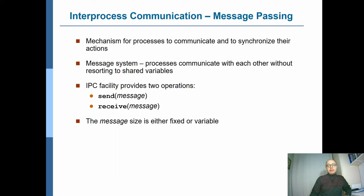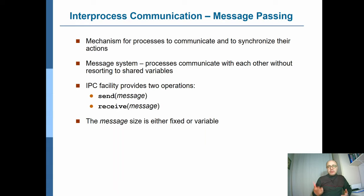Now that we've discussed shared memory as a means of inter-process communication, let's have a look at the second model, which is message passing. In the case of message passing, the processes are communicating with each other not by using shared variables in the shared memory, but through what we call mailboxes. In message passing as an IPC method, we have two primitives — simple function calls. One is for sending messages and the other is for receiving messages. These messages could be either fixed or variable in size.